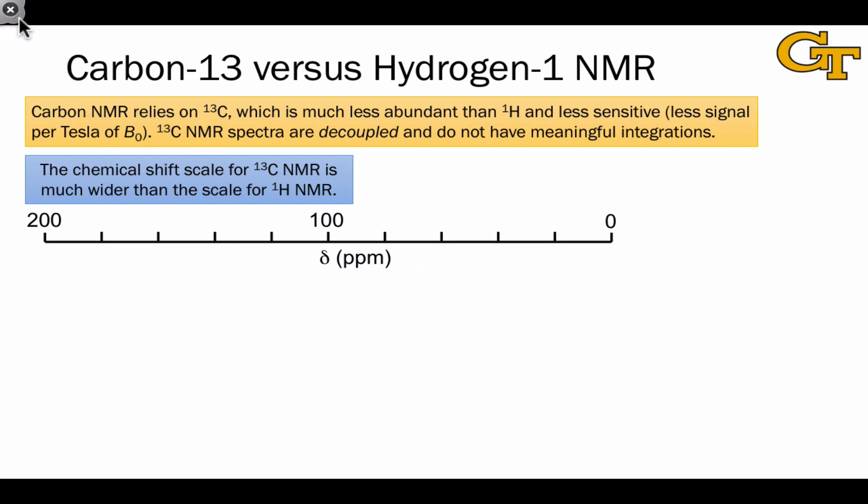As it turns out, the chemical shift scale for carbon-13 NMR is much wider in a chemical shift sense than the scale is for proton NMR. In the vast majority of cases, it runs from about 0 ppm for the most shielded of carbons, in other words, the most electron-rich of carbons. The intuition here is the same as it is in proton NMR spectroscopy.